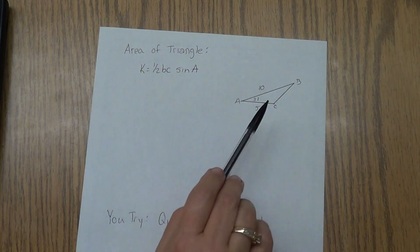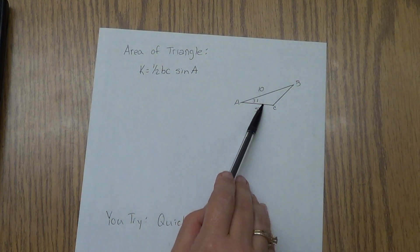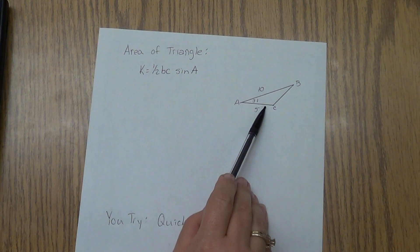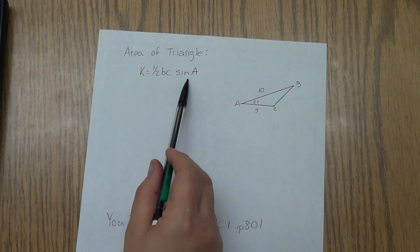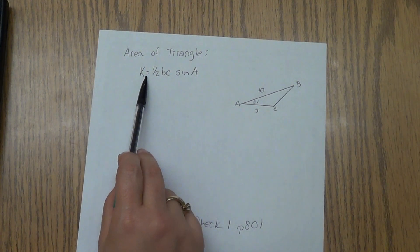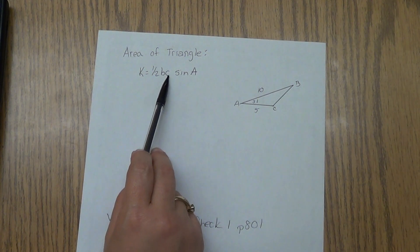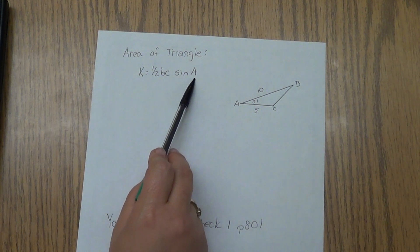But what happens when they give you a non-right triangle like this, and they don't give you the height? Well, there's this formula that you've never been taught before because you didn't know enough about trig. The formula is this: K equals one-half BC times the sine of A.